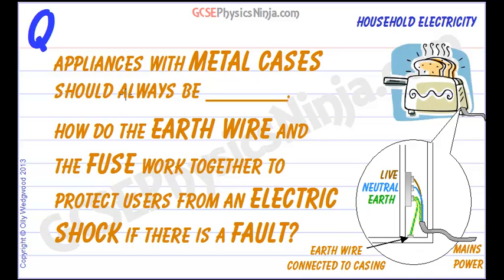Appliances with metal cases should always be earthed. What does that mean? Well, it means that the metal case is connected to the earth wire, and that earth wire is an alternative route for electricity to flow if there is a fault.